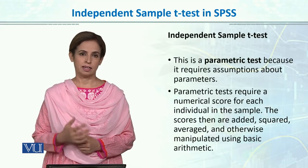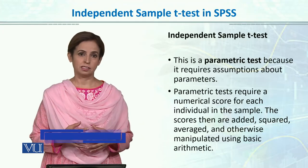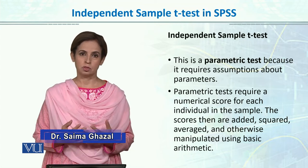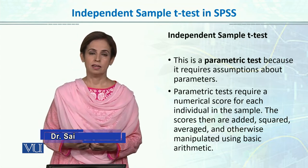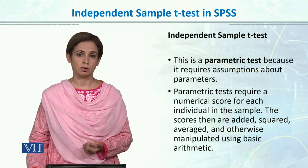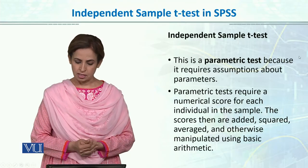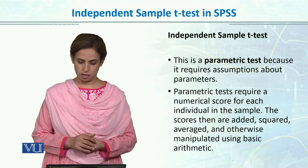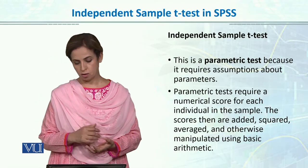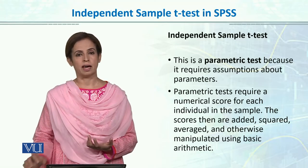There are some things we haven't covered yet. This is a parametric test, which means it makes assumptions about the parameters of the population. We study small samples but are interested in the larger population and make assumptions about it. Parametric tests also require a numerical score for each individual in the sample — scores that can be added, subtracted, squared, or averaged. So we deal with numerical values.